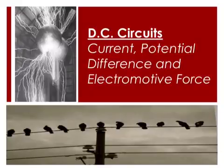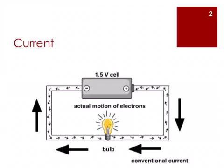This is the first part of a series of lectures on electricity. An object becomes charged if electrons are added to or removed from it. When the charged object is provided with a conducting path, such as a wire, electrons start to flow through the path. When electrons move, we say that an electric current is produced.